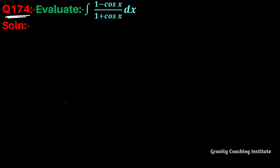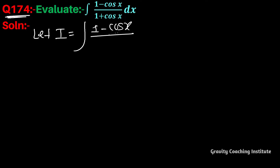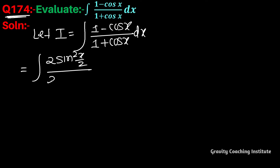Question number 174: evaluate the integration of (1 minus cos x) by (1 plus cos x) dx. So let I equal to integration of (1 minus cos x) upon (1 plus cos x) dx. We know that 1 minus cos x equals 2 sin squared (x/2), and 1 plus cos x equals 2 cos squared (x/2).